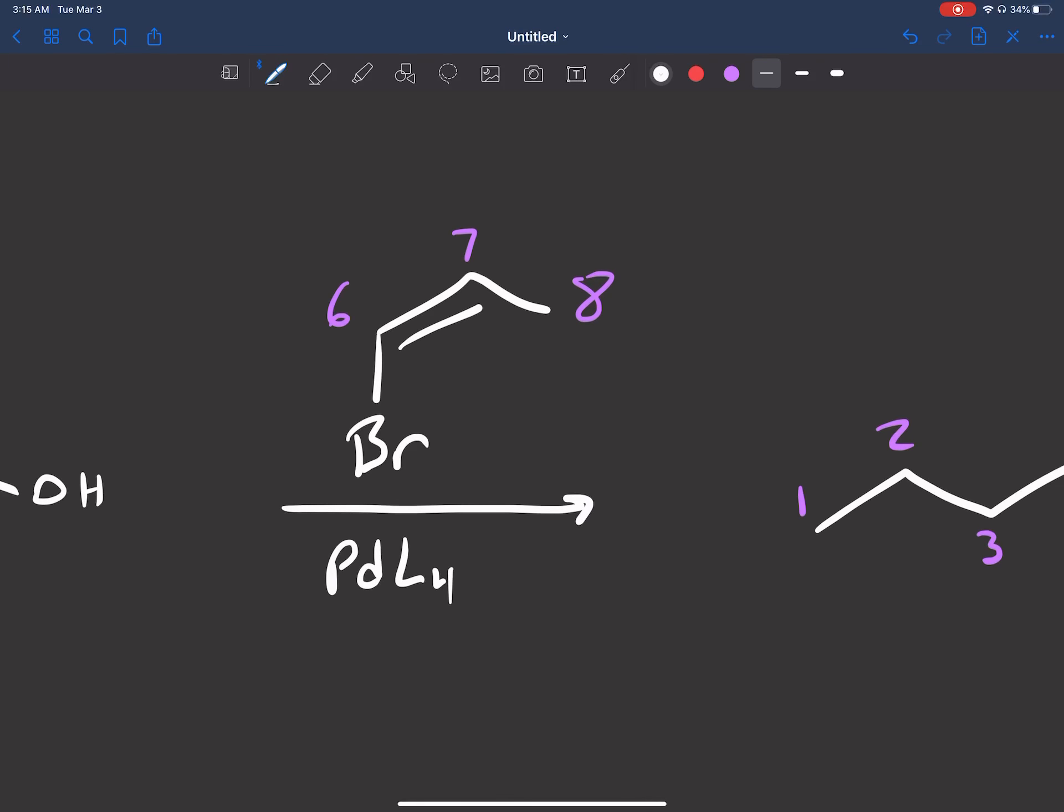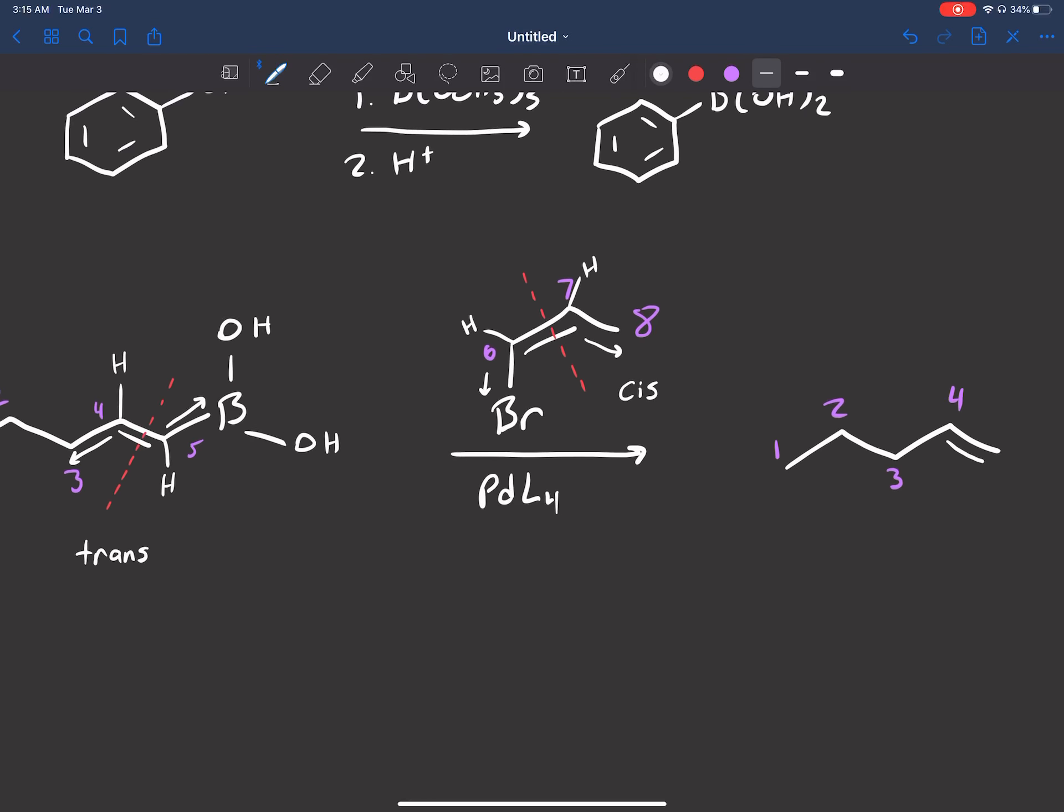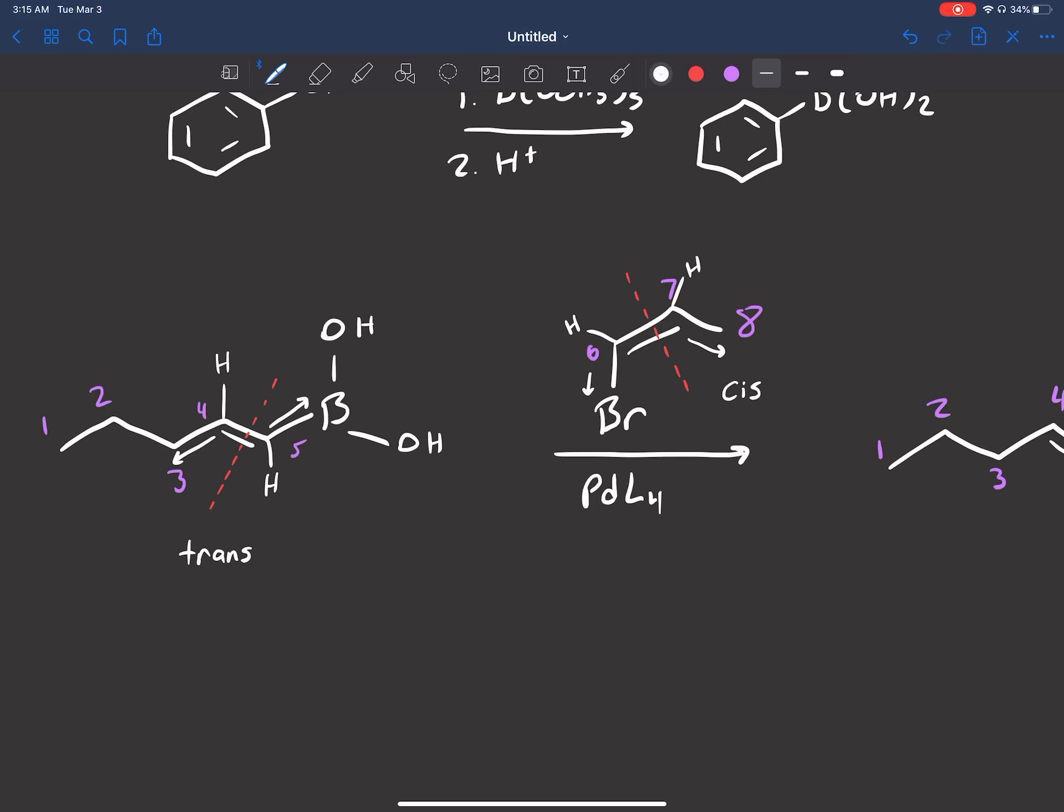Since the two highest priority groups are on opposite sides, this is trans. Now let's look at this compound here. If we split the double bond, I have hydrogens here. On the left-hand side, the boron is my highest priority, coming down. On the right-hand side, carbon 8 is my highest priority, coming downward too. So they're on the same side of the double bond, therefore this is cis.